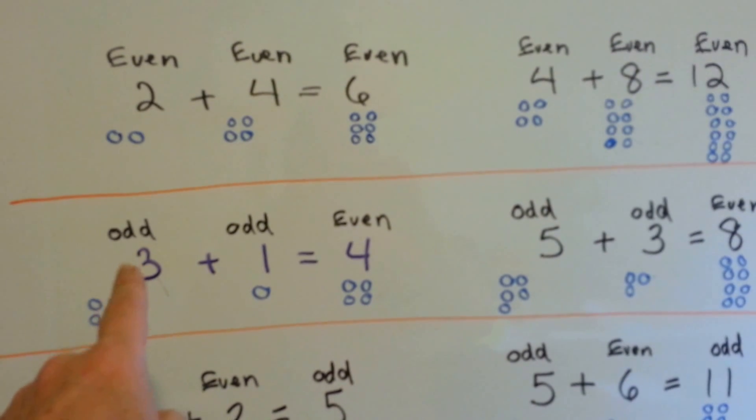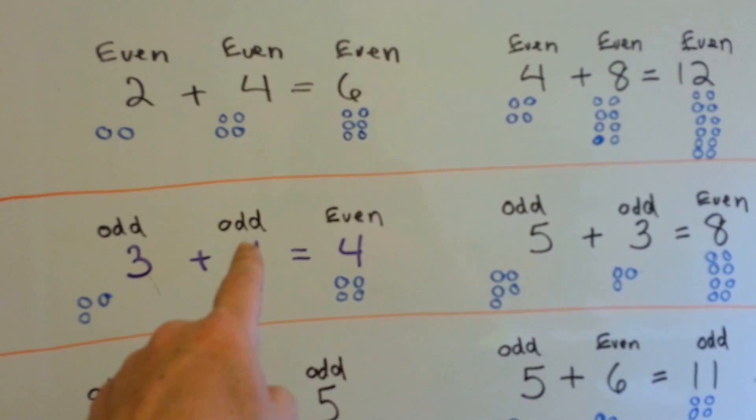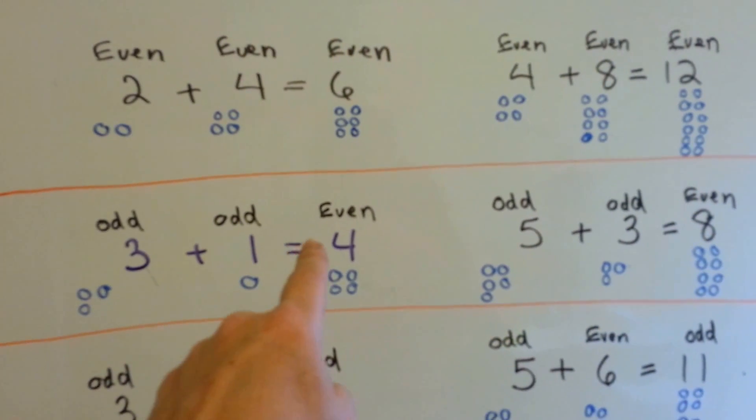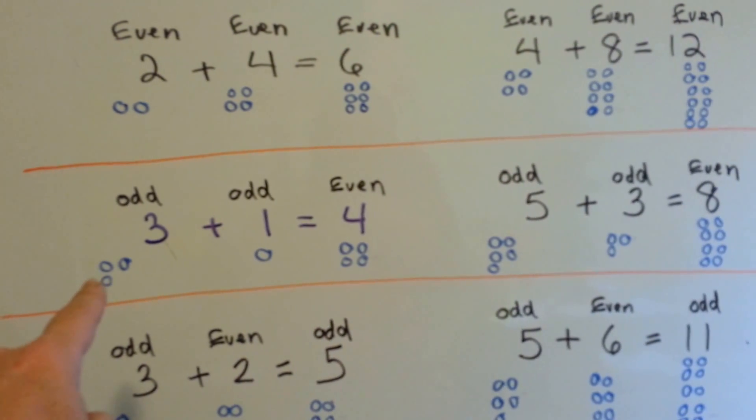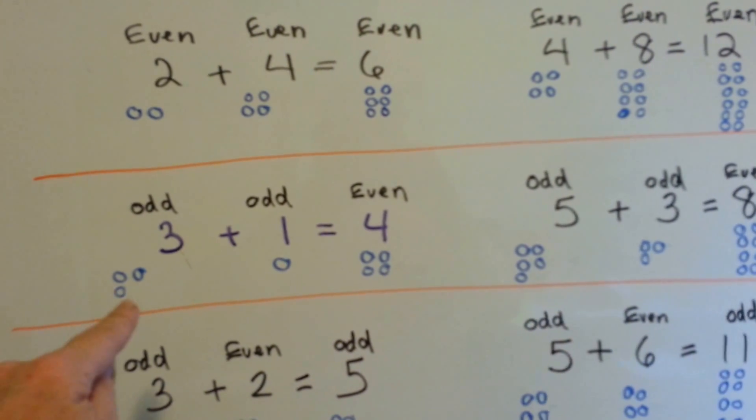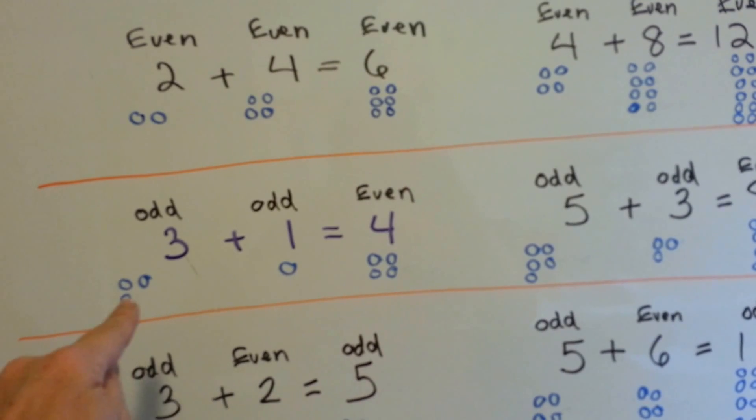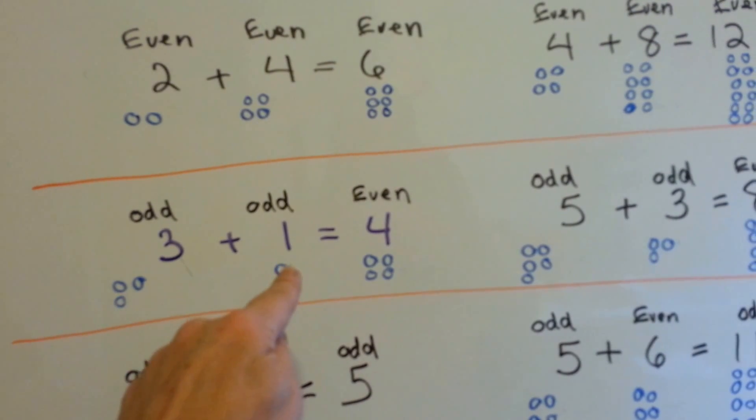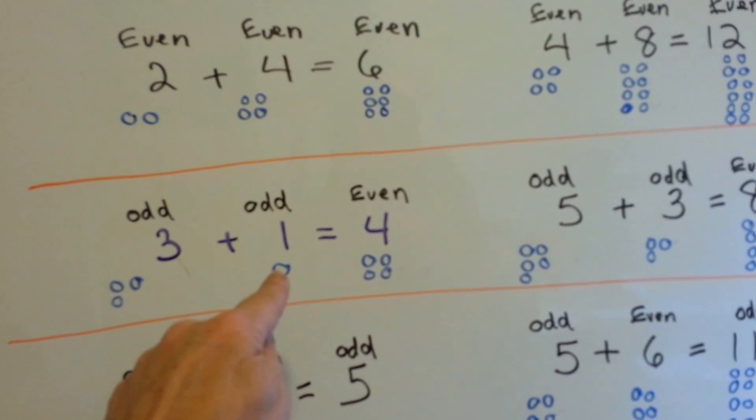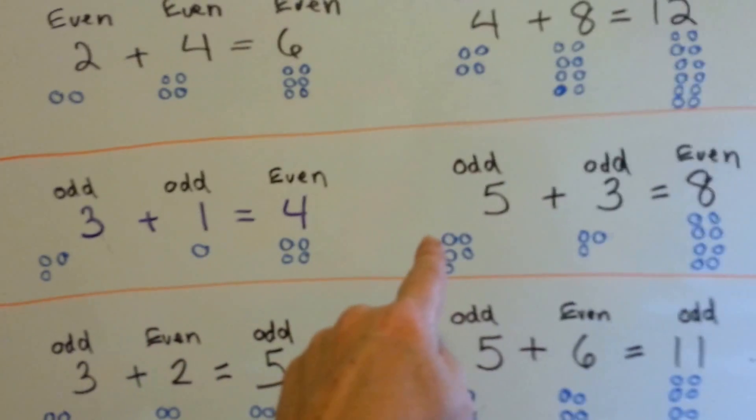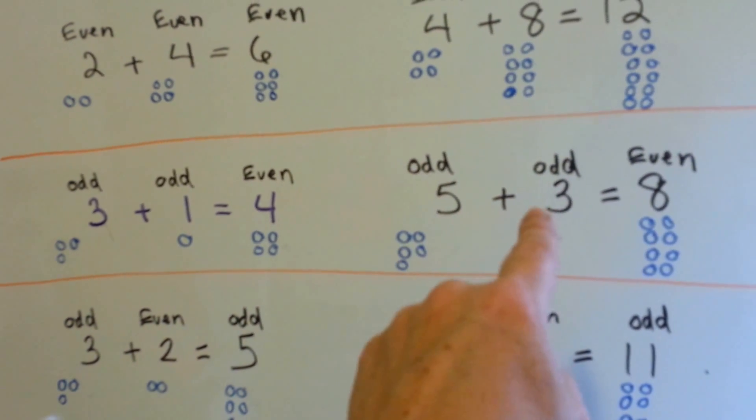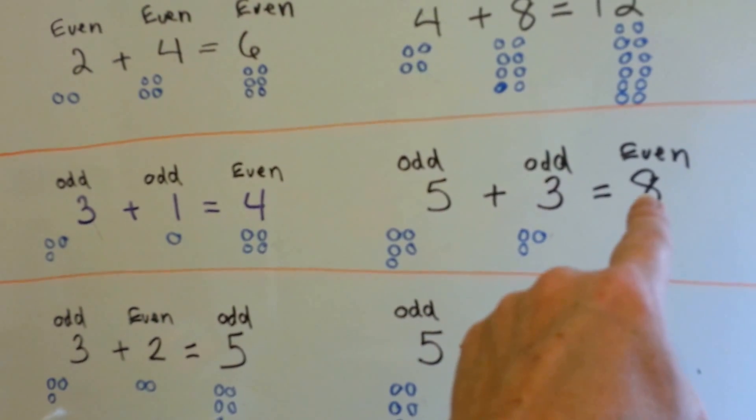So now look at this. An odd number plus an odd number gives you an even. What do you think of that? If you have 3, see it's got a friend but that one doesn't, so it's odd, plus 1, that one definitely doesn't have a friend, is an even number. See how they each have a friend? An odd number plus an odd number gives you an even number.